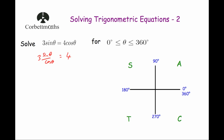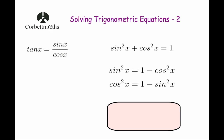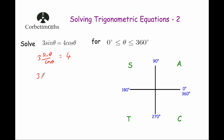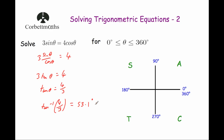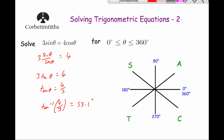Now sine β over cos β is tan β, so that gives us 3 tan β equals 4. Dividing by 3 gives tan β equals 4 thirds, which looks just like the equations from the previous video. We take the inverse tan of 4 thirds, which gives 53.1 degrees to one decimal place. We mark that acute angle onto the CAST diagram in all four locations: 53.1 degrees in each quadrant.